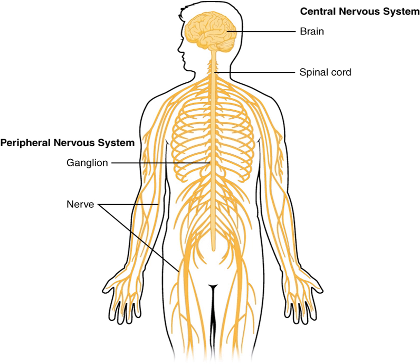From and to the spinal cord are projections of the peripheral nervous system in the form of spinal nerves, sometimes called segmental nerves. The nerves connect the spinal cord to skin, joints, muscles, etc., and allow for the transmission of efferent motor as well as afferent sensory signals and stimuli. This allows for voluntary and involuntary motions of muscles, as well as the perception of senses.